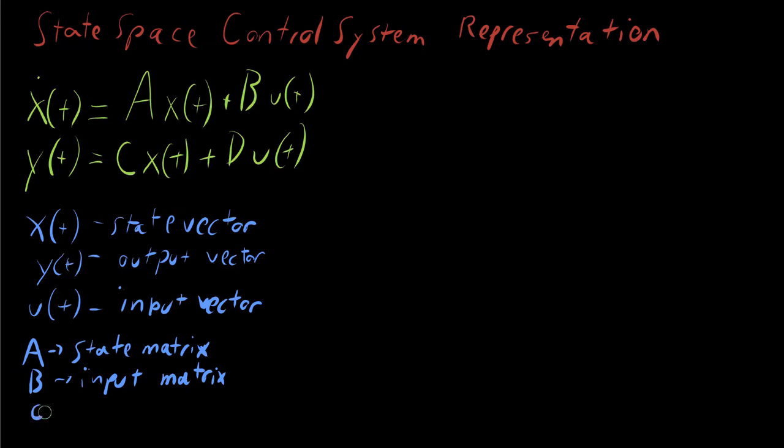Then we have C, which is called the output matrix. You can see that here, C times x of t, the internal state of the system that we're tracking, provides us with a contribution to the output.